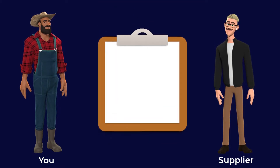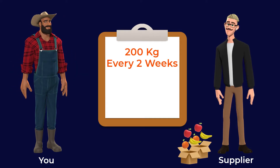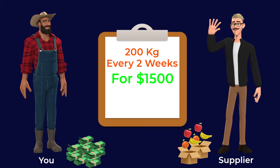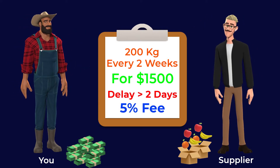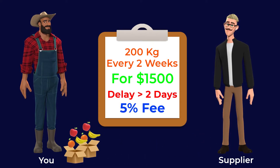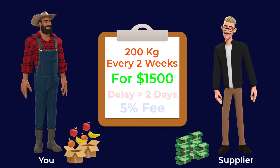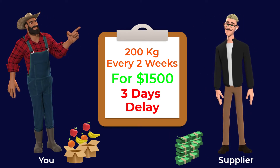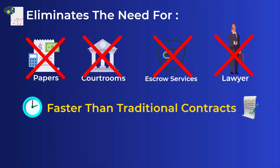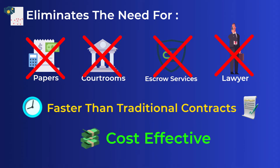For example, you find a new supplier for your supermarket and both of you agree on the terms of the trade: he will supply 200 kilograms of fruits every two weeks and get paid $1,500. If he delays your shipment for more than two days, a 5% fee will be deducted. So you send the $1,500 to the smart contract, and when the supplier delivers and uploads the digital delivery receipt, he gets his money released automatically. If he delays, he gets paid $1,425 only. All of this happens without the need for papers, courtrooms, escrow services, lawyers, or other intermediaries — faster and more cost-effective.